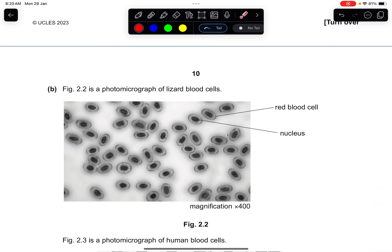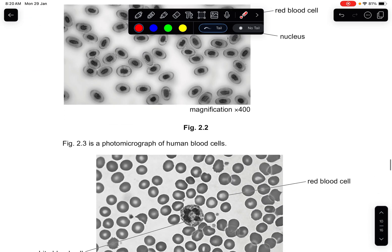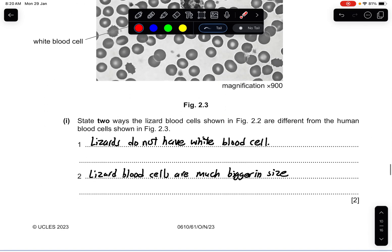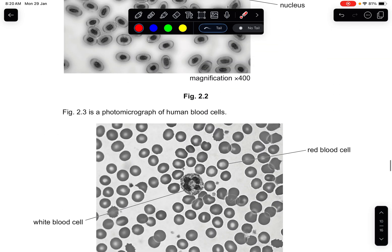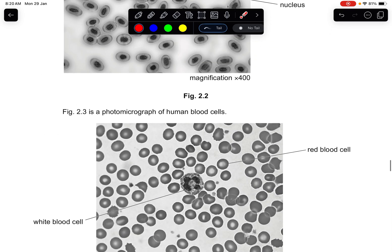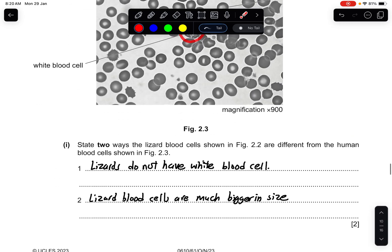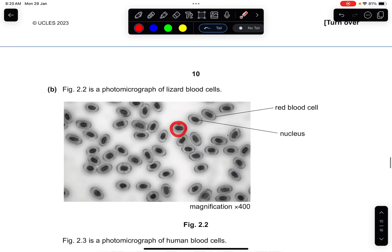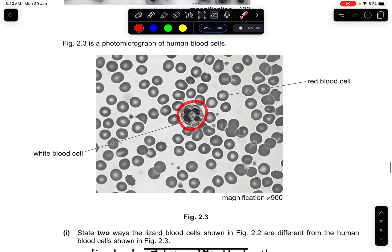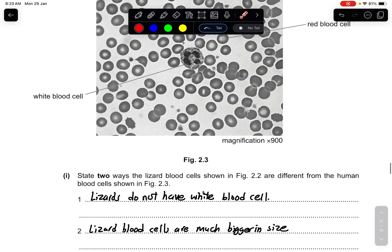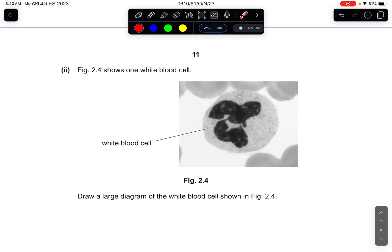Part B: Figure 2.2 is a photomicrograph of lizard blood cells and this is the human blood cells. They want you to state two ways the lizard blood cell shown in figure 2.2 are different from the human blood cell shown in figure 2.3. What I found is that in lizards they do not have any white blood cell, but here there is a white blood cell for human. Lizard blood cells are much larger in size. You can see the sizes of this and the sizes of the red blood cells are much bigger.